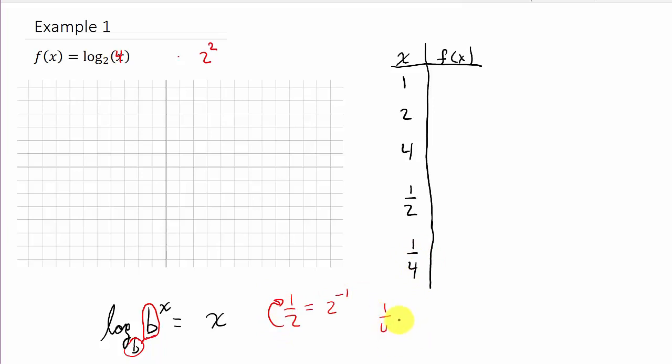And can I rewrite the 1 fourth as 2 raised to a power? Well, 1 fourth is what? 1 over 2 squared. And then if I move that across the fraction bar, it changes the sign of my exponent. So that's 2 to the negative 2. So you can see all these numbers that I chose can be written as 2 raised to a power. And the reason I did that is because the base of my log is 2.